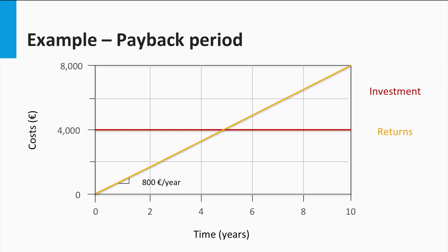As the years progress, the savings accumulate and there comes a point in time when the accumulated savings are greater than the original investment. The period of time elapsed until that point is called the payback period. In this case, family Smith's PV system has a payback period of 5 years.